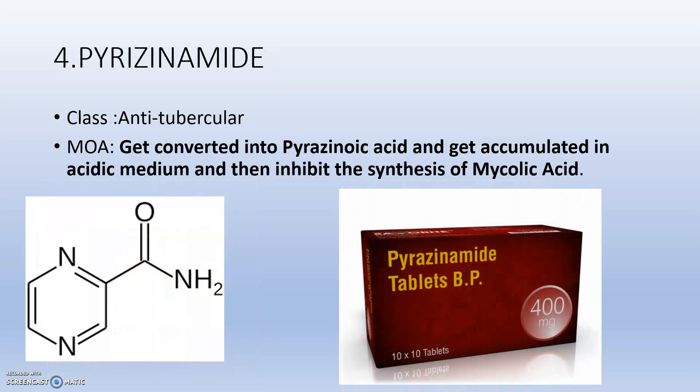The next drug is pyrazinamide, also a very important anti-tubercular drug. Its mechanism of action: it gets converted into pyrazinoic acid, which accumulates in the acidic medium and inhibits the synthesis of mycolic acid. No mycolic acid synthesis means no efficient cell wall is formed, making the bacteria easier to kill by other drugs and our body's immune cells.